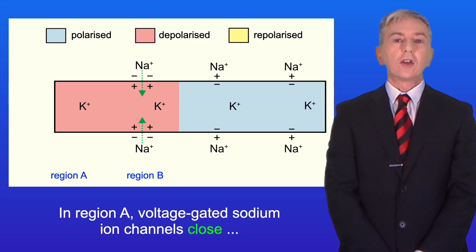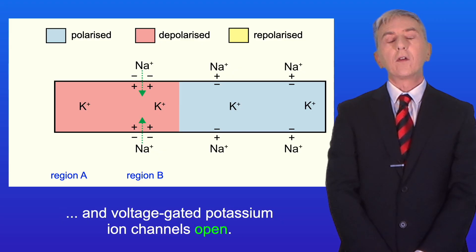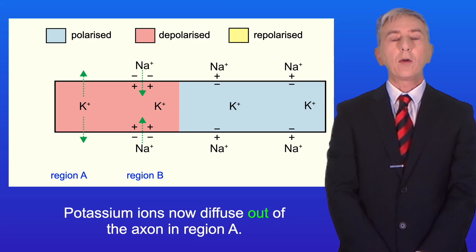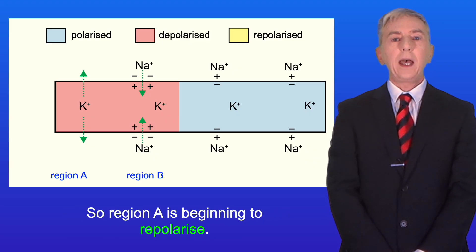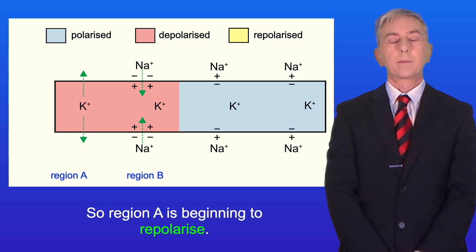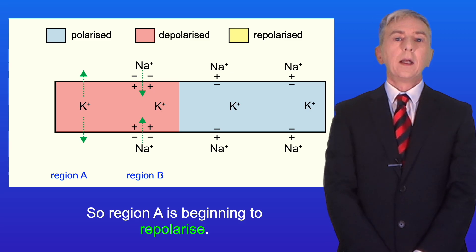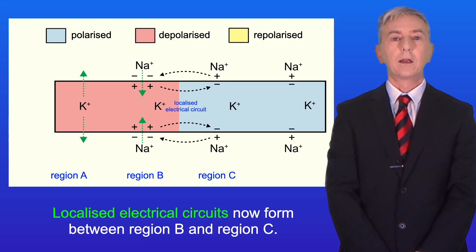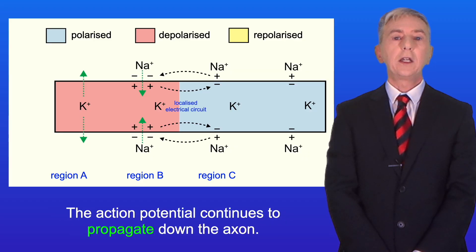In region A, voltage-gated sodium ion channels close and voltage-gated potassium ion channels open. Potassium ions now diffuse out of the axon in region A, so region A is beginning to repolarize. Localized electrical circuits now form between region B and region C, and the action potential continues to propagate down the axon.